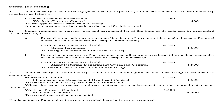In the second case, when scrap is common to various jobs and accounted for at the time of sale, it can be handled two ways. The first way regards scrap sales as a separate line item of revenues: debit cash or accounts receivable, and credit scrap revenues. The second way regards scrap sales as offsets against manufacturing overhead — generally used when the dollar amount of scrap is material: debit cash or accounts receivable, and credit manufacturing department overhead control.